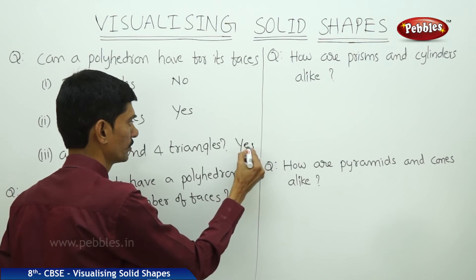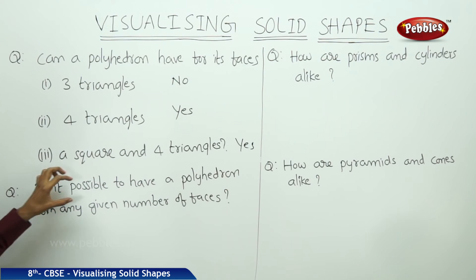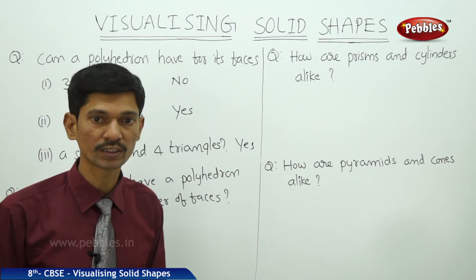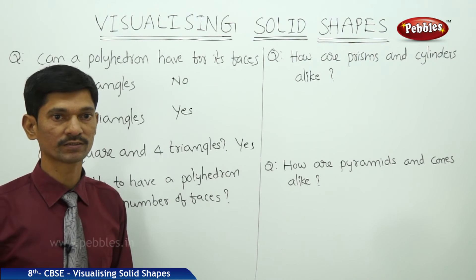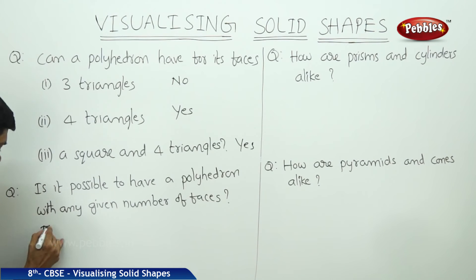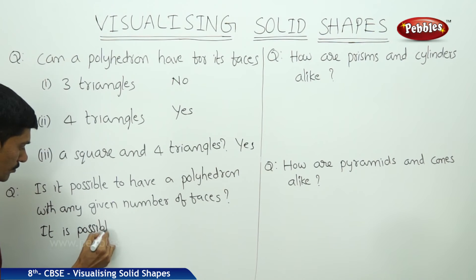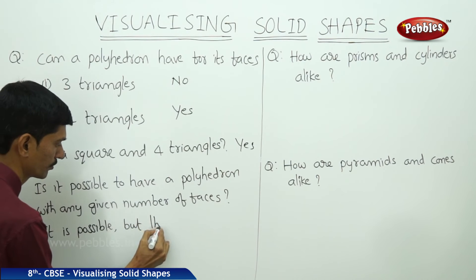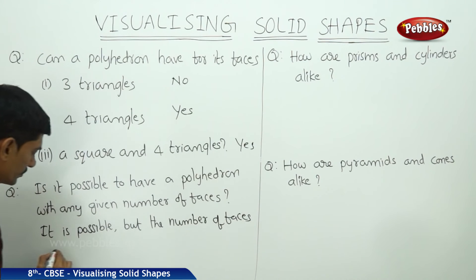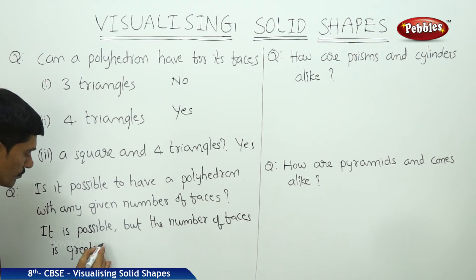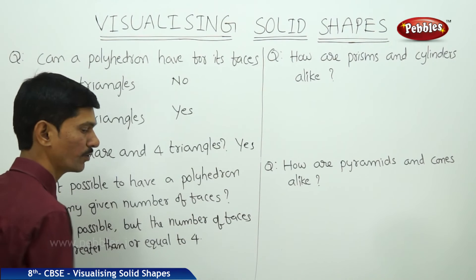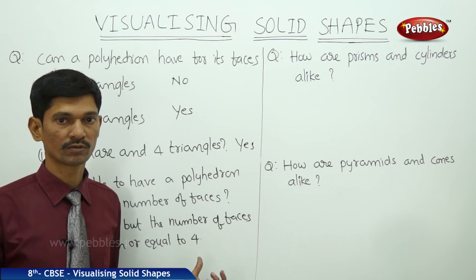Is it possible to have a polyhedron with any given number of faces? Yes, we can form a polyhedron with any given number of faces, but the number of faces must be greater than or equal to four. So to form a polyhedron, the minimum number of faces must be four.